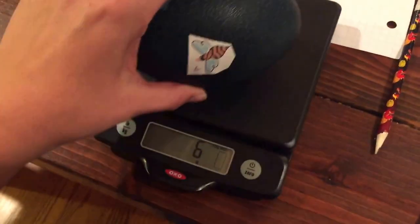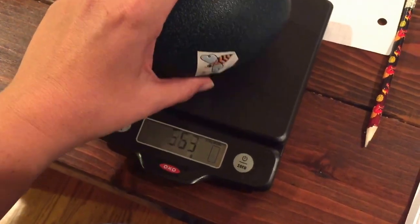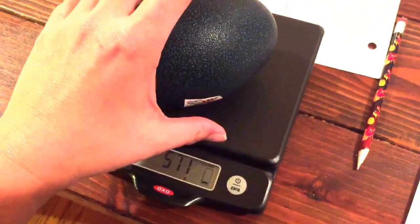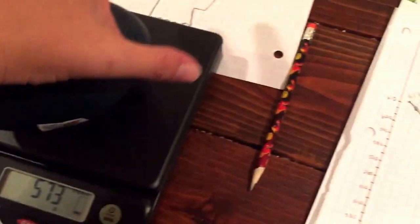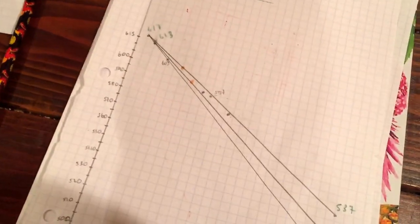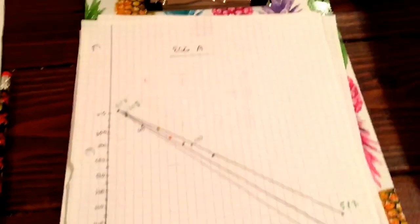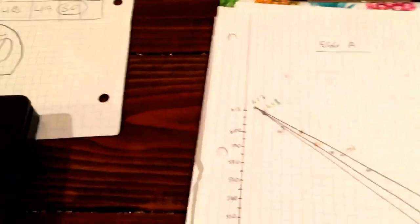So this is egg A right here. So let me put egg A on. So 573 grams. So now I got to figure out is 573 grams in the zone.